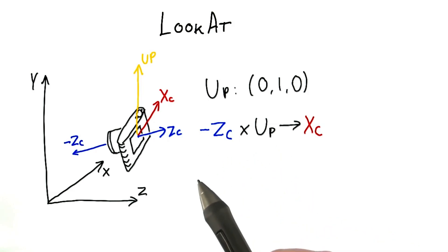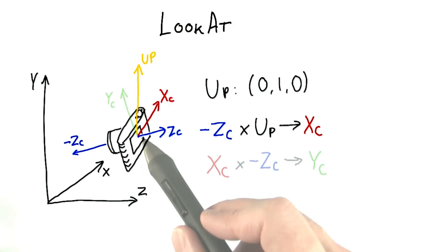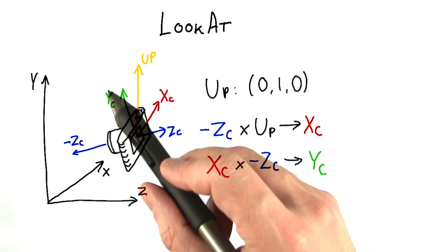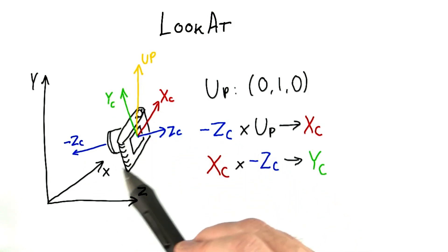Now we have two axes locked down, camera z and camera x. We can find the true up direction, the camera's y axis, by then taking the cross product of the x and z axes.